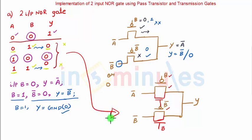You can verify it with the truth table. Hope you have followed. In further clips we will see the implementation of 2 input XOR and XNOR gate using pass transistors and transmission gates. Thank you very much and stay tuned.